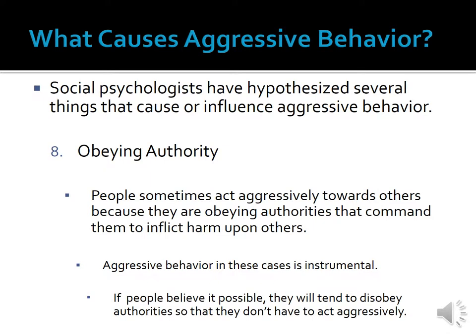The eighth factor is obeying authorities who command that people perform aggressive actions toward others. As discussed earlier in this course, people sometimes act aggressively towards others because they are obeying authorities that command them to inflict harm. Aggressive behavior in these cases is instrumental since people are acting aggressively not because the other person has done them wrong in some way, but because they feel compelled to do so because of an authority figure. This was shown by the fact that if people believe it possible, they will disobey the authority so that they do not have to act aggressively.